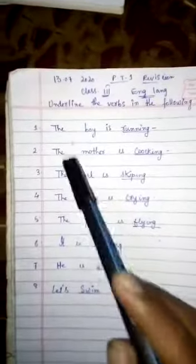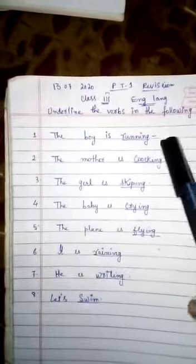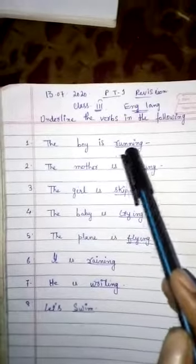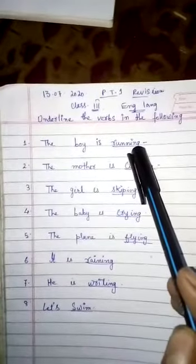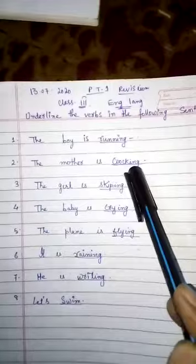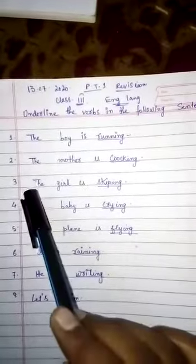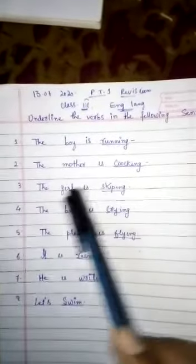So first revision: underline the verbs in the following sentences. You just have to underline the verbs. Here are some sentences — you can see here: 'The boy is running' — running will be underlined because it is the verb. 'The mother is cooking' — cooking will be the verb. 'The girl is keeping' — is keeping is the verb.